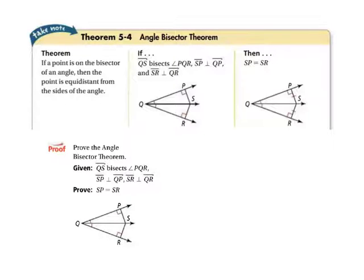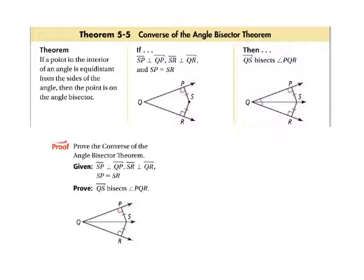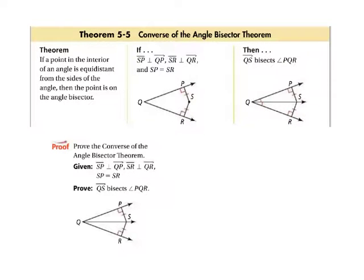Now let's look at the converse of the angle bisector theorem. If a point in the interior of an angle is equidistant from the sides of the angle, then that point is on the angle bisector. So if segment SP is perpendicular to segment QP, segment SR is perpendicular to segment QR, and the length of segment SP equals the length of segment SR, then ray QS is the bisector of angle PQR. Go ahead and have a look at the proof of the converse of the angle bisector theorem.